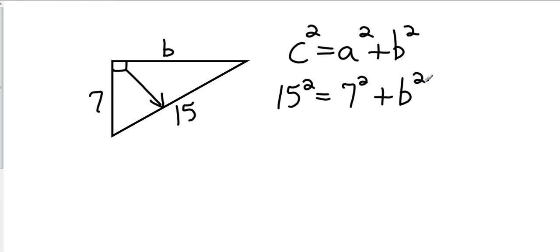Again, don't confuse that with a 6. That's the letter B. So I'm going to go ahead and square these. That's going to give me 225 equals 49 plus B squared. Okay, and then I'm going to subtract 49 from both sides, because I want to get the B by itself.